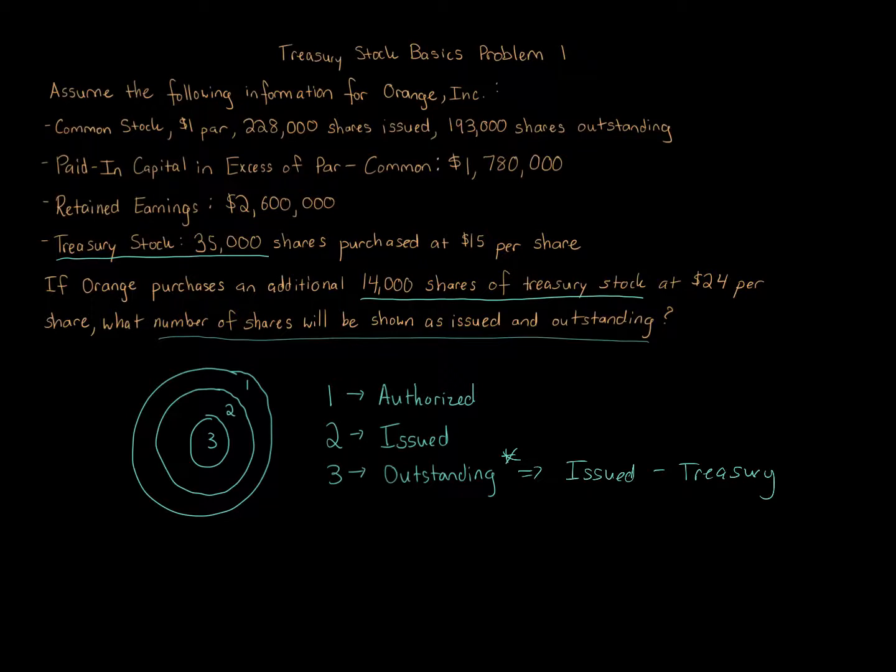To calculate the number of shares issued and outstanding, we start with 228,000 shares issued. We're told that—nowhere are we told that the number of shares increased. We don't issue more shares of stock. We're told paid-in capital in excess of par is a certain amount, retained earnings—those numbers, because we're looking at the number of shares, we can ignore. But we are told treasury stock—that's very important: 35,000 shares of treasury plus 14,000 shares of additional treasury.